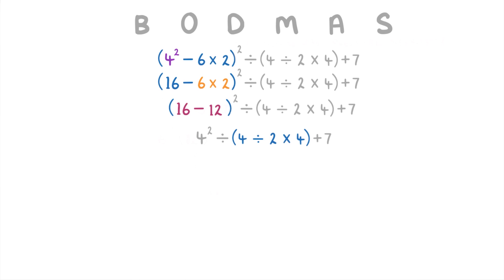Next we deal with the other bracket. The only operations inside are division and multiplication, so we do the division first: 4 divided by 2 equals 2. Then we multiply that 2 by the 4 to get 8. So now we have 4 squared divided by 8 plus 7.